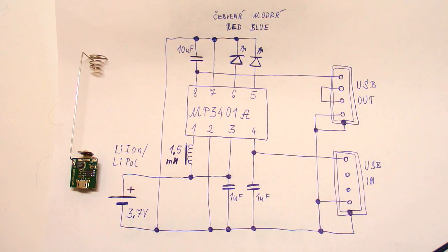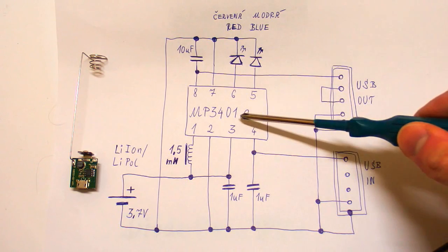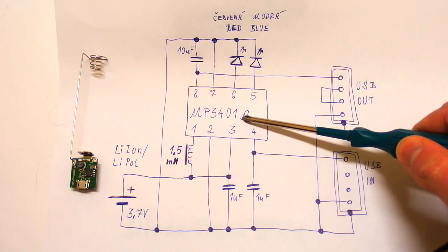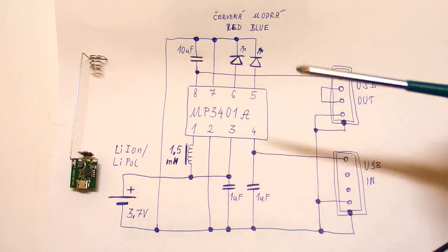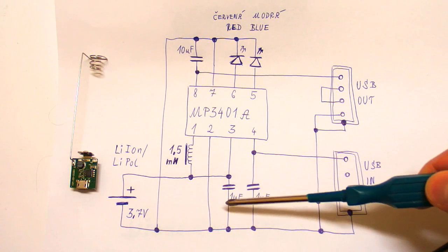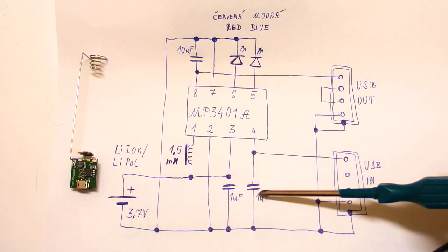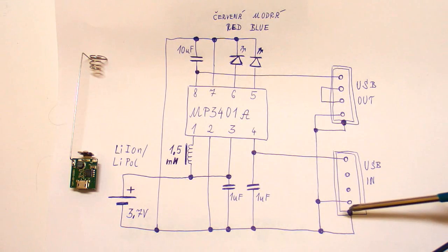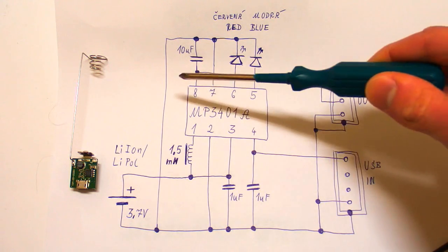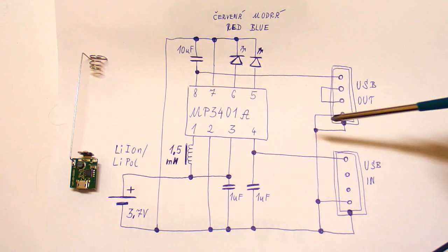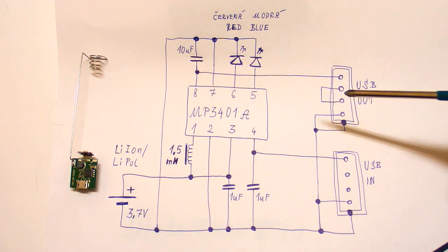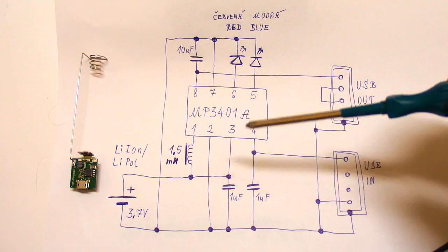So I have reverse engineered a schematic of it. And there is not much of it. There is just an eight pin chip with a few components around. There is the battery, a capacitor in parallel with it, another capacitor in parallel with the USB in, and the third capacitor is in parallel with the USB out. And there are two LEDs.